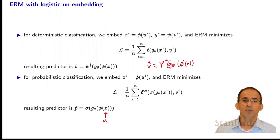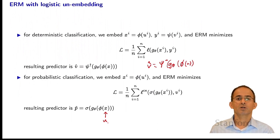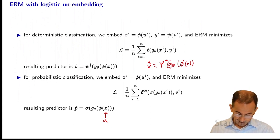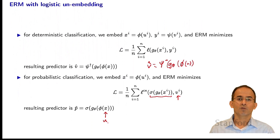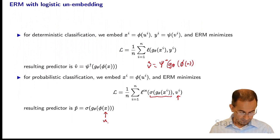For probabilistic classification, we don't embed v — we embed u using phi. Then we minimize the average cross-entropy loss. Here, one entry in the cross-entropy loss is simply v (the true v), and the other is the unembedded value of the output of the predictor. So g_theta of x_i produces a y-hat, and sigma of g_theta of x_i produces a p-hat. The resulting predictor is sigma composed with g_theta composed with phi of u.